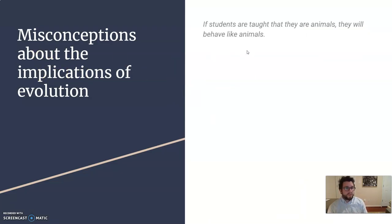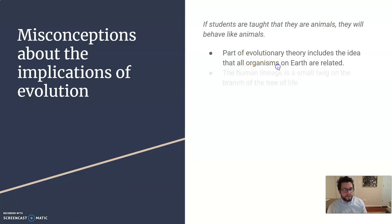The implications of evolution. If students are taught like they are animals, they will behave like animals. Well, if you want to behave like an animal, that's your choice. We can't make you do this or that. We just got to present the information to you. Part of evolutionary theory includes the idea that all organisms are related. Absolutely. But this lineage is not a main trunk. It's a small twig on the branch of life.